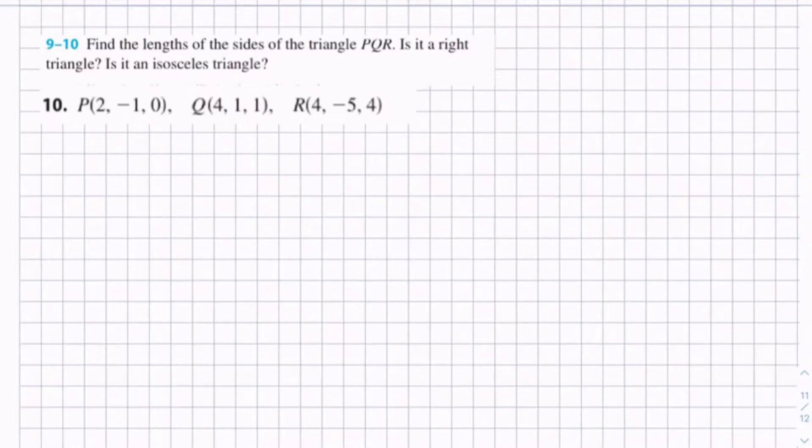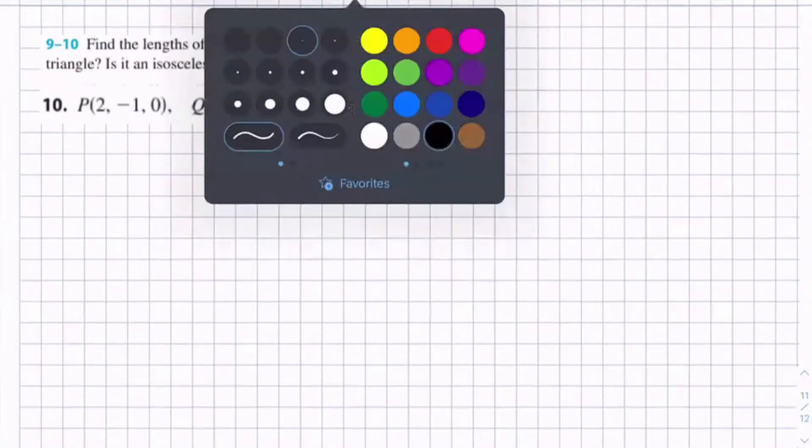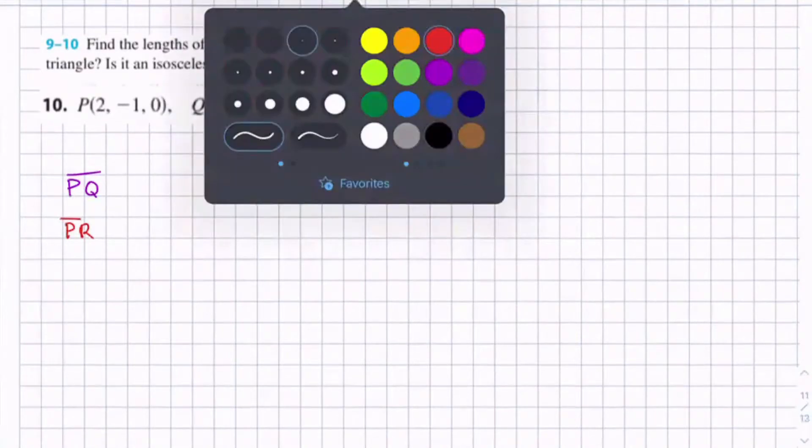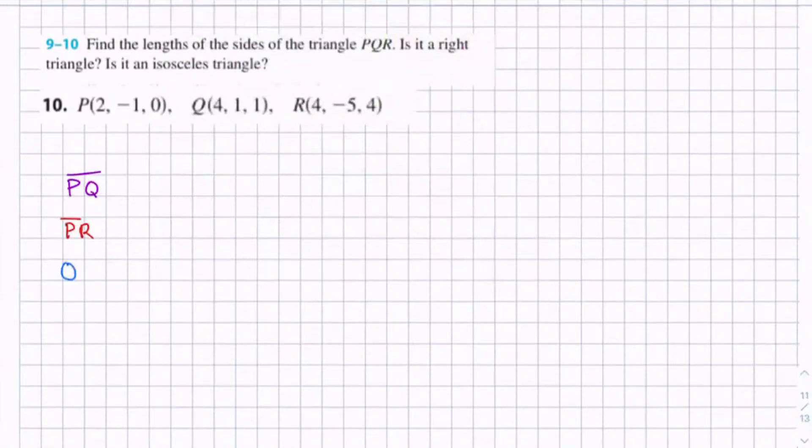So first we want to split up these points into segments of the triangle. So we have PQ, PR, and QR. These three segments compose the triangle.